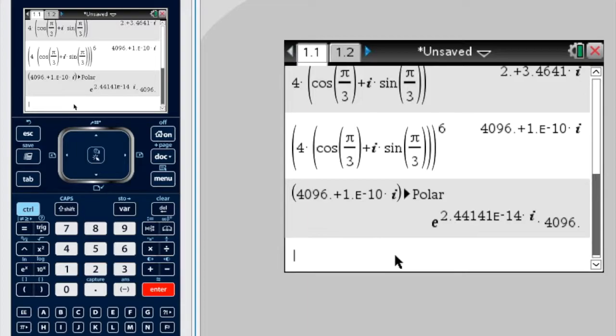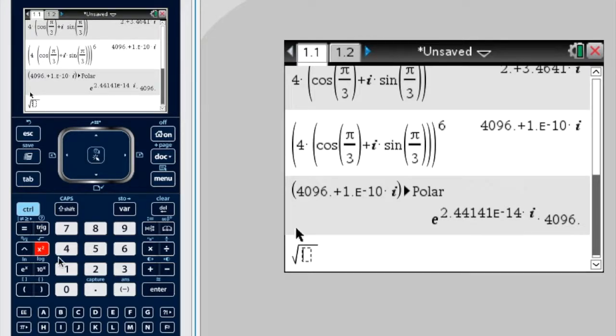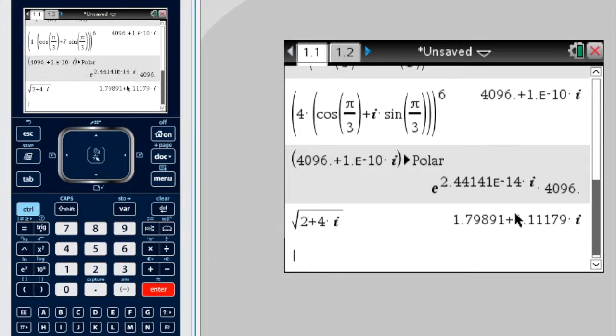Similarly, you can also square root a complex number as well. So if we give it a square root, and then put in a complex number, 2 plus 4i, enter, and there's our equivalent complex number, and you can convert it to polar and so forth.